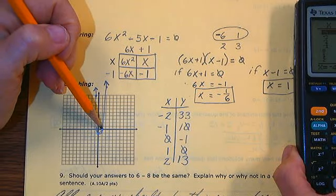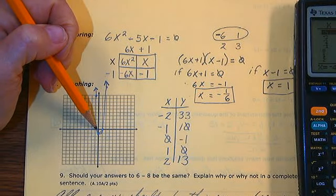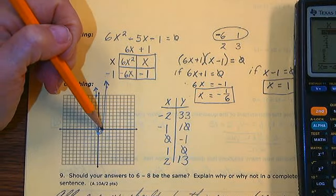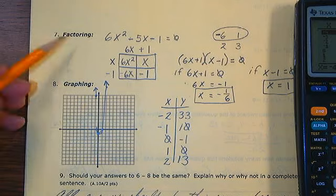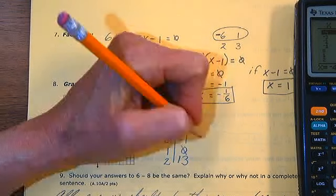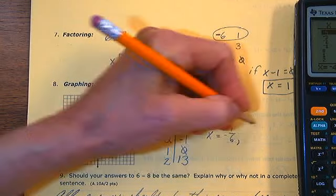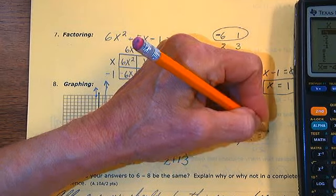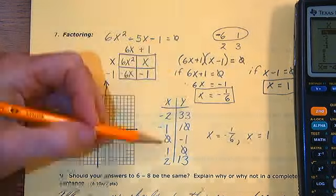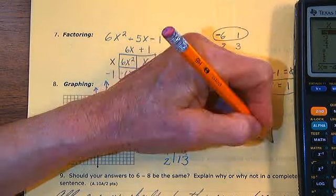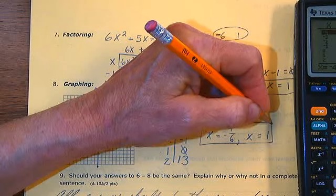I can also trace my graph to see where my parabola crosses the x-axis. But the most important thing is I've already solved this problem twice. Certainly, my solutions are all going to agree. So x equals negative one-sixth, x equals 1.